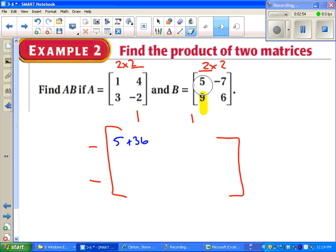I'm going to go up and erase my highlighting and change my highlighting to first row, second column. That's going to give me a number for my first row and second column. I go 1 times negative 7 is negative 7. 4 times 6 is positive 24. Then I can go erase my highlighting again.